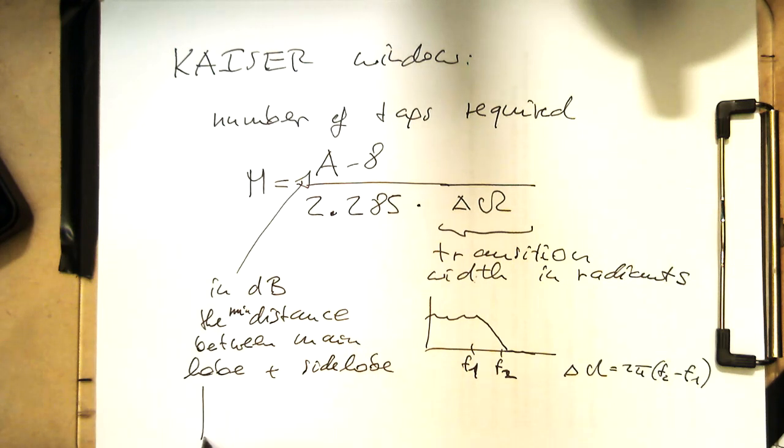In this case, this means that if our filter response goes like that, then this is the minimum decibel between this here and the first side lobe here. So that's again our frequency here.